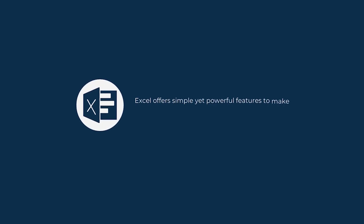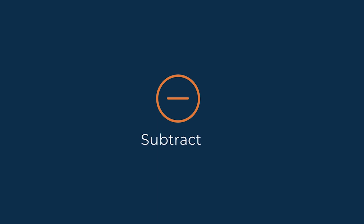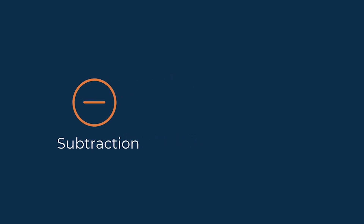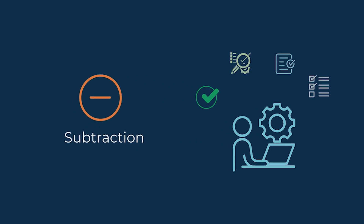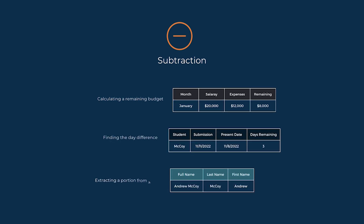Excel offers simple yet powerful features to make our calculations easy. One such example is using the subtraction option. You can use this feature to perform a wide range of tasks, such as calculating a remaining budget, finding the date difference, extracting a portion from a text, and many more.